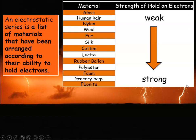This is called an electrostatic series. It shows which things have a weaker hold on electrons and which have a stronger hold. As you go down the series, things have a stronger hold on electrons — if you rub them with something higher up, they'll take the electrons from that material. An electrostatic series is a list of materials arranged according to their ability to hold electrons, their affinity for electrons.